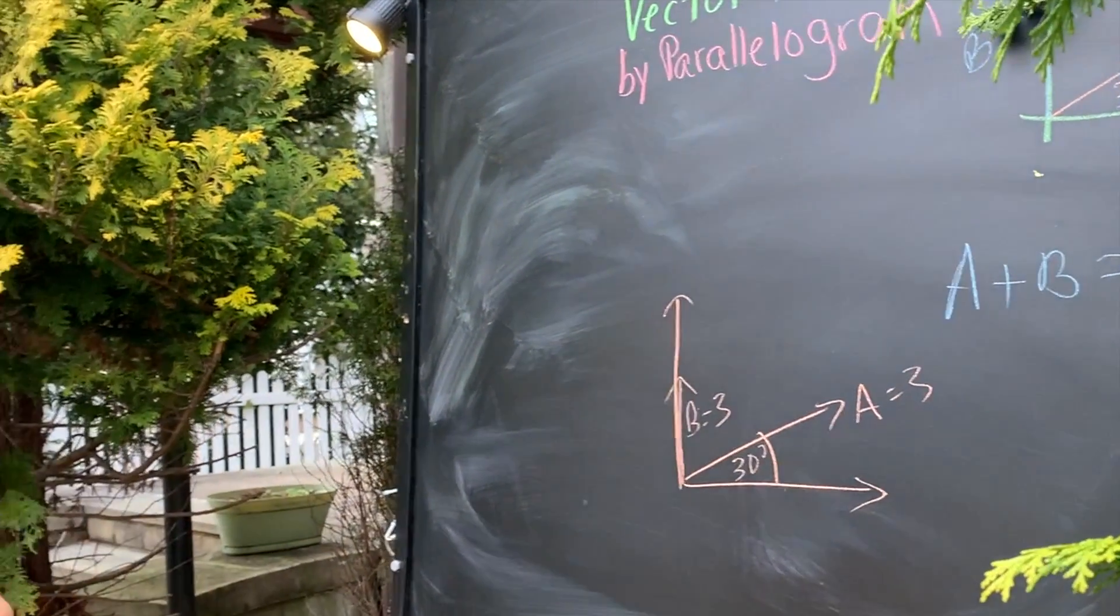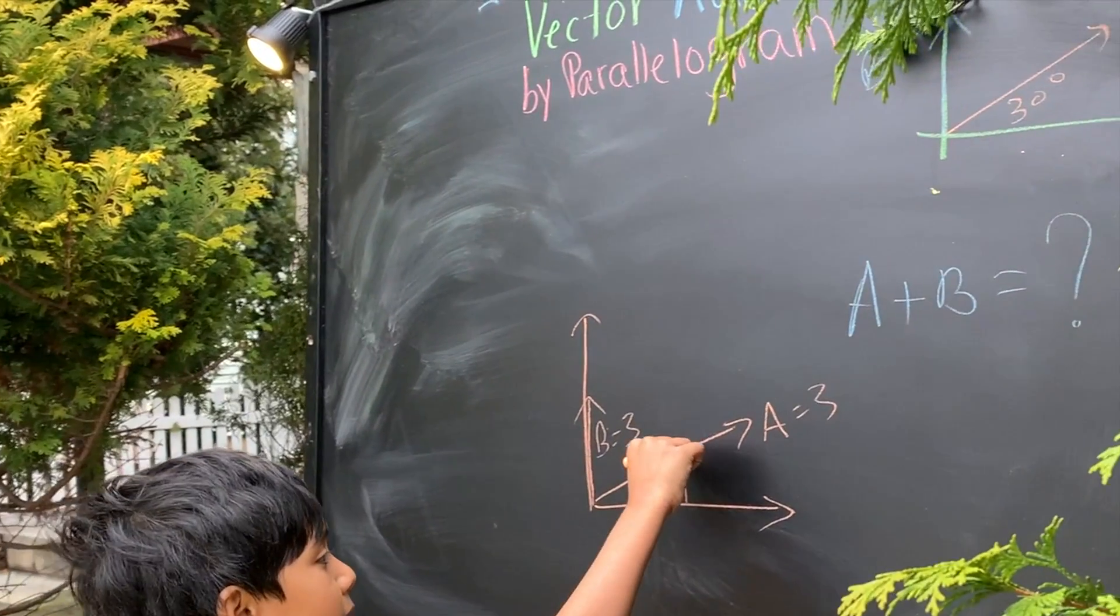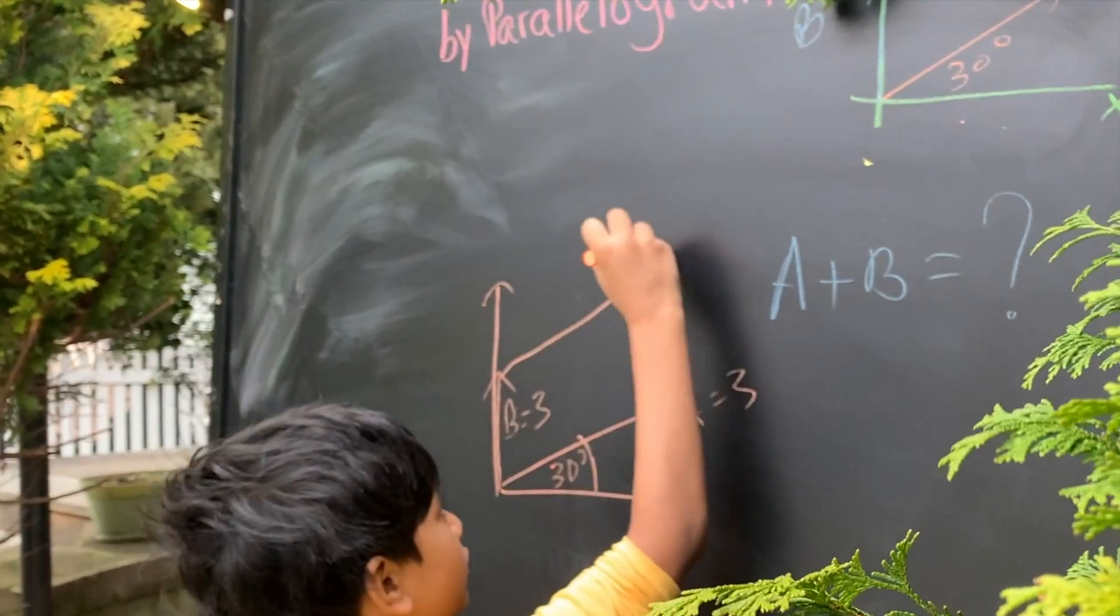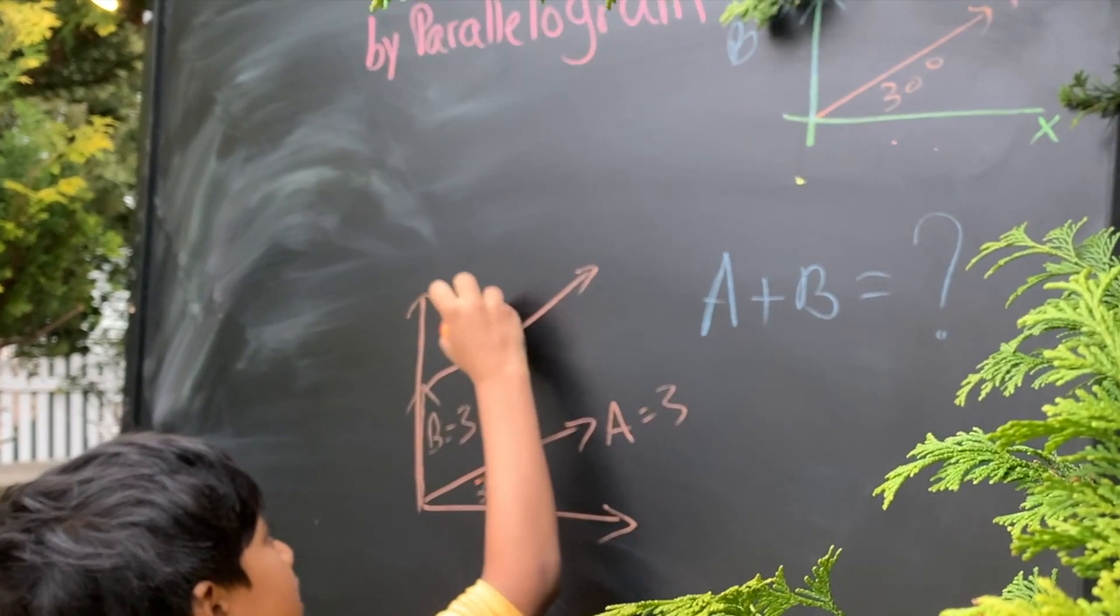Now, if we make a parallelogram by putting this here, this is like a ghost version of a.